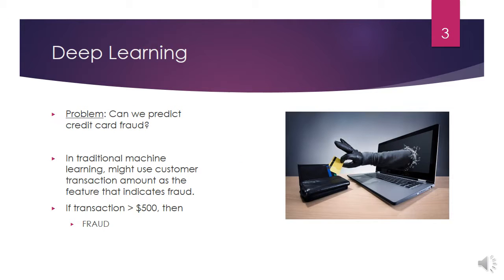Let's look at an example where we try to predict the likelihood of credit card fraud. In traditional machine learning, we might use the customer's transaction amount as the feature that might indicate fraud. If the transaction amount was over $500 or some other threshold, we would think fraud had occurred.